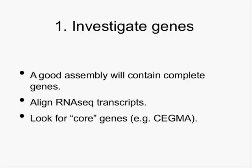What do we do after this magical assembly process? The first thing is to investigate your genes. A good assembly will contain complete genes. One way to find out if you've got complete genes is to look at your RNA-seq transcripts — assemble them, align them back to the genome, and they should be there completely. If they're missing, you've got holes in the assembly. You can also look for core genes; a project in my lab called SGMA finds genes that are in every organism, and if your organism is missing them, that's a hole in the assembly.